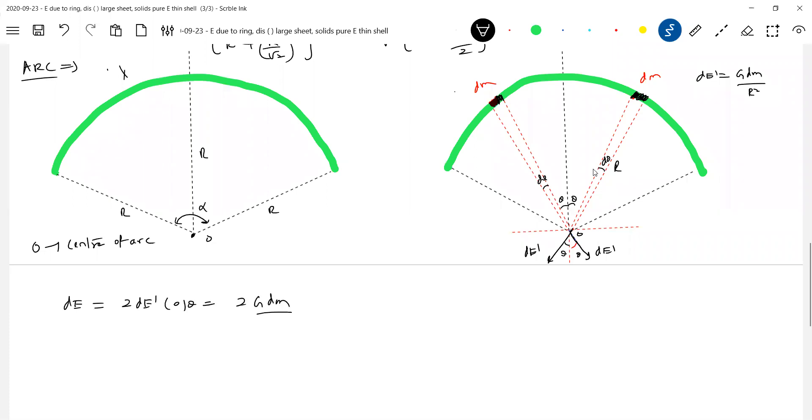Net field dE is equal to 2 dE dash cos theta. dE dash is g dm by r squared cos theta. Further, 2g over r squared dm, what we can write? Lambda into ds. Arc length, let it be ds, into cos theta. So 2g lambda over r squared. What is ds? ds will be r d theta. Okay, one r this will be. So this will become 2g lambda over r cos theta d theta. So let's integrate this one.